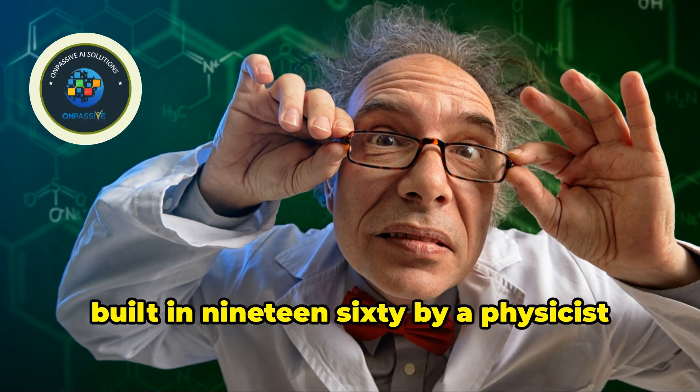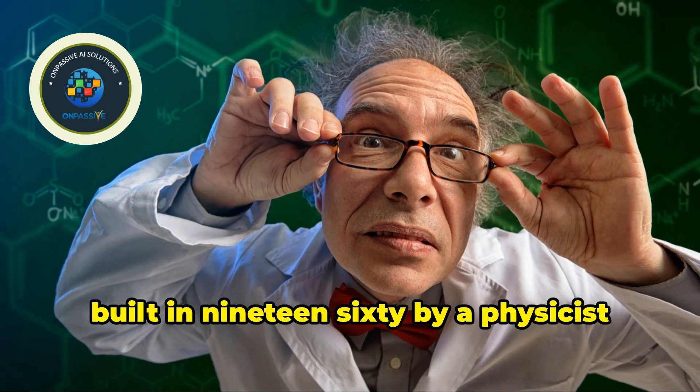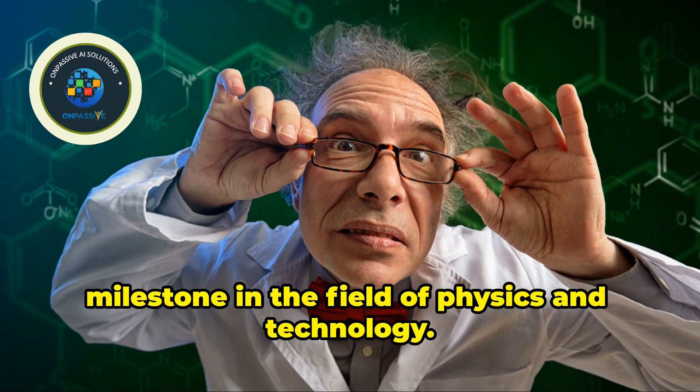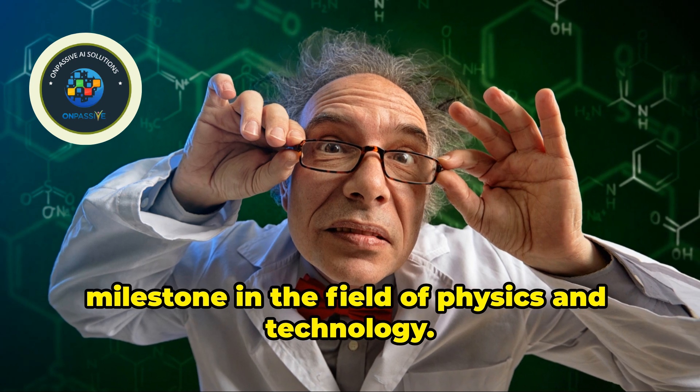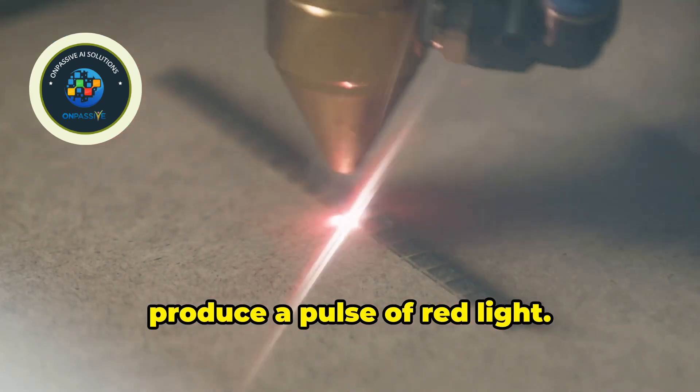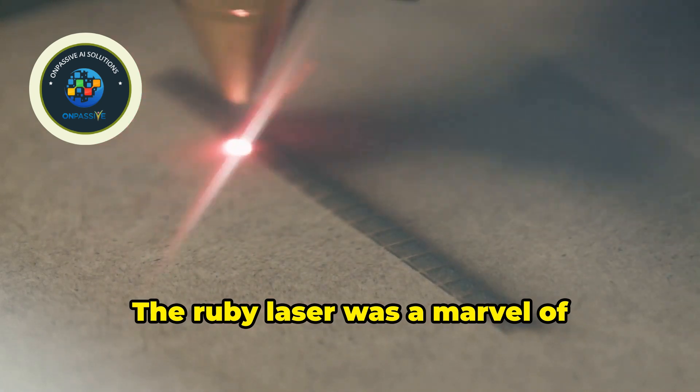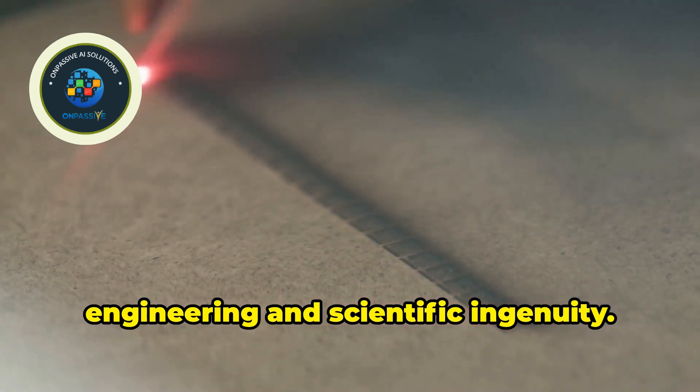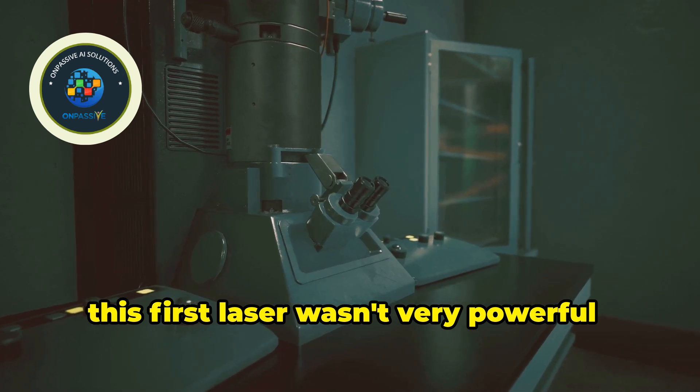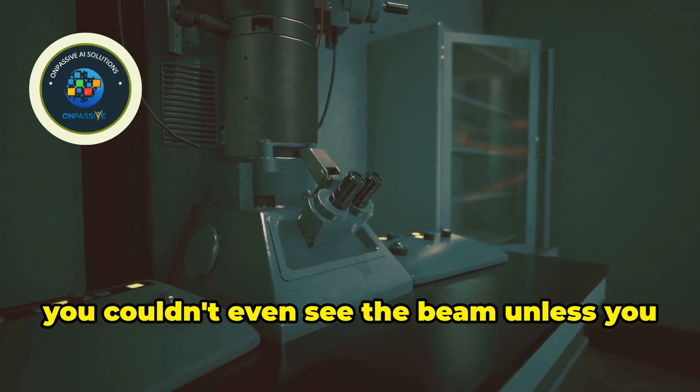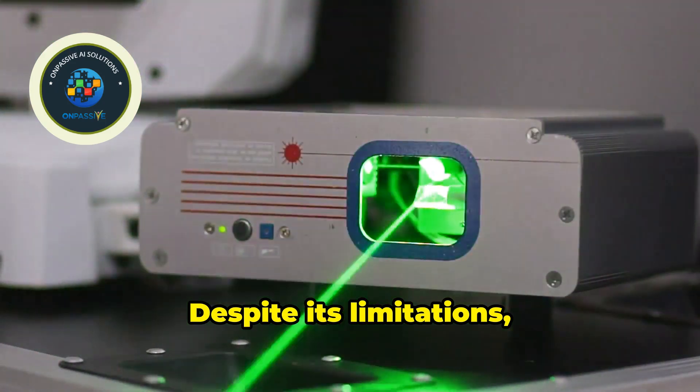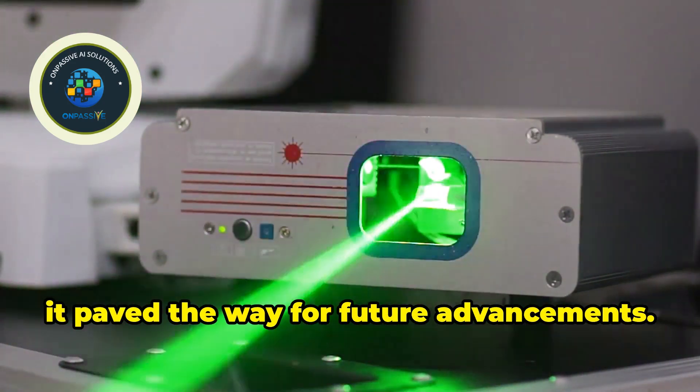The world's first working laser was built in 1960 by a physicist named Theodore Maiman. This invention marked a significant milestone in the field of physics and technology. It used a synthetic ruby crystal to produce a pulse of red light. The ruby laser was a marvel of engineering and scientific ingenuity. Although it was a groundbreaking invention, this first laser wasn't very powerful. You couldn't even see the beam unless you looked at it through a special filter. Despite its limitations, it paved the way for future advancements.